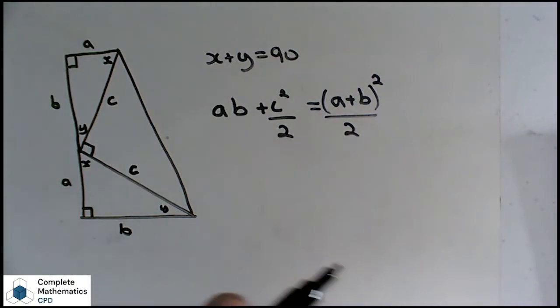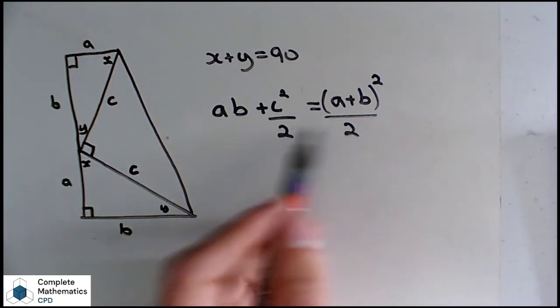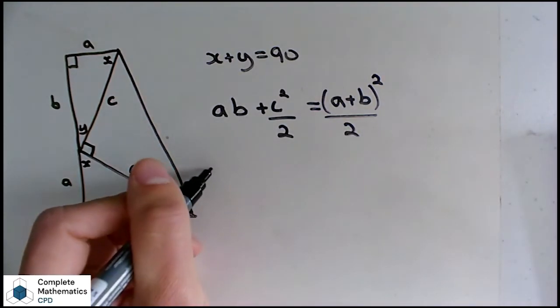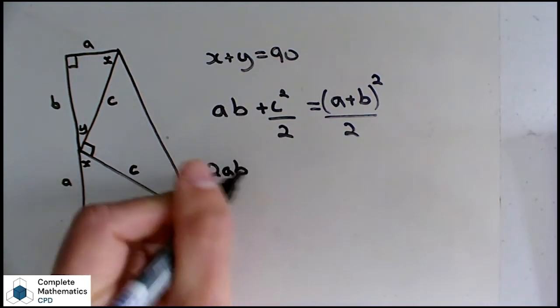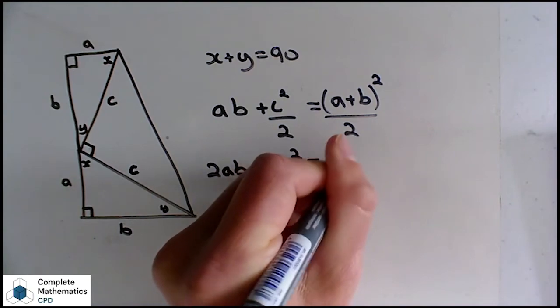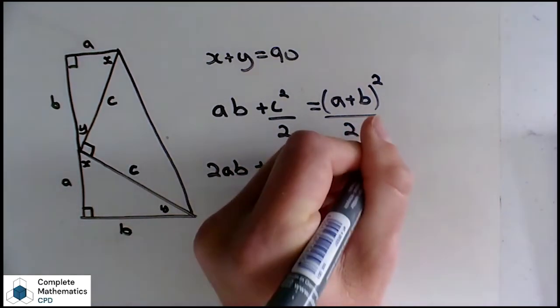Now, all we have to do now is multiply this out and see what happens. Now, I'm going to get rid of these division by 2s to start with by multiplying everything by 2. So that's going to leave me with 2AB plus C squared equals A plus B squared.